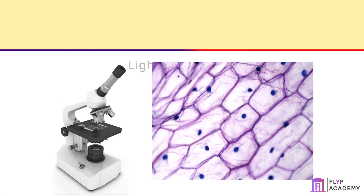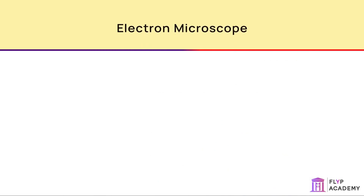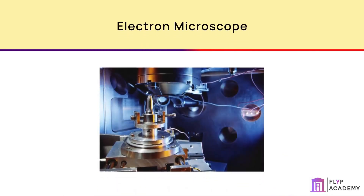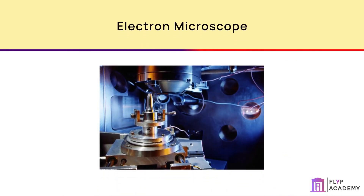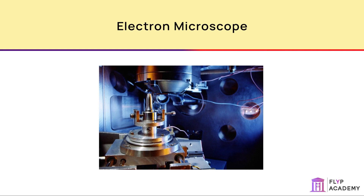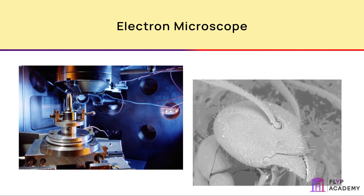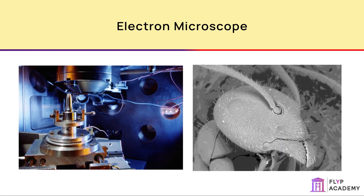The second type of microscope is the electron microscope. These use a beam of electrons instead of light to view a sample. However, in this case, the sample must be dried and placed in a vacuum chamber, so it cannot be a living thing.